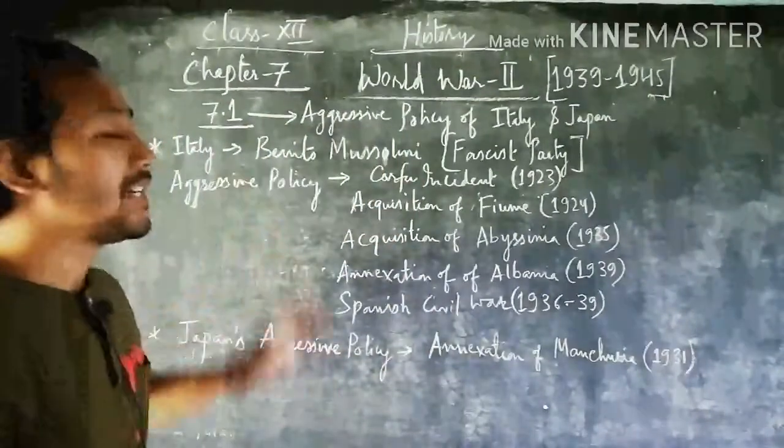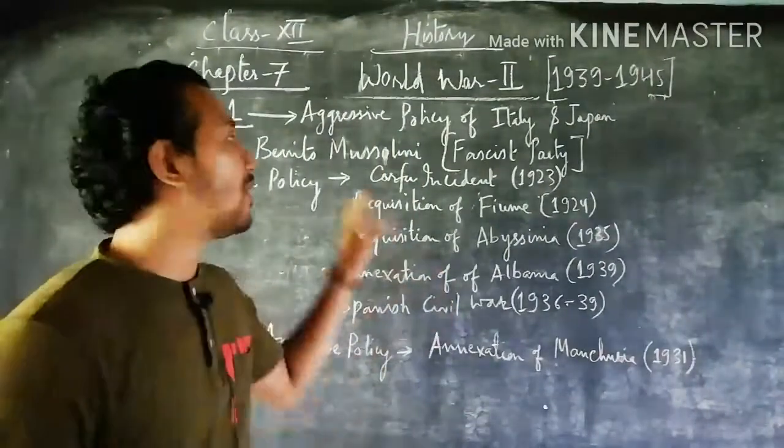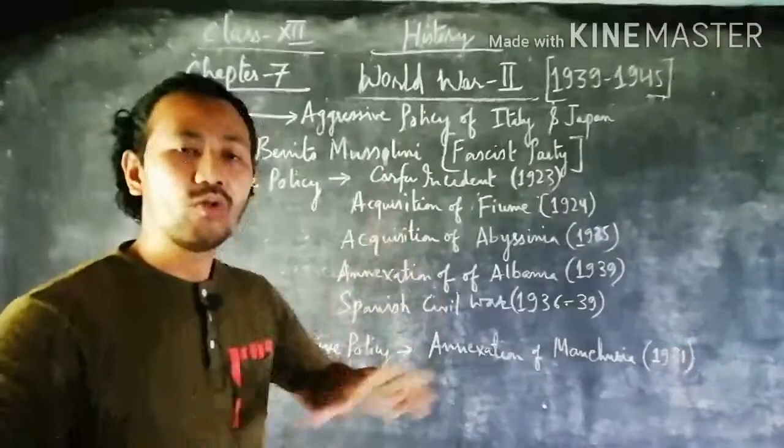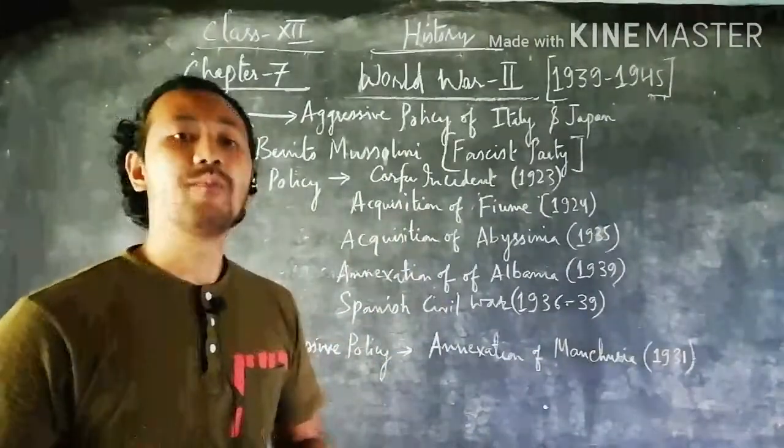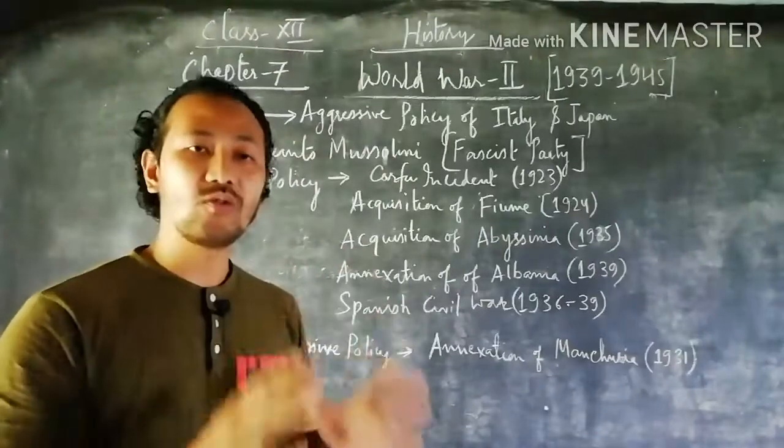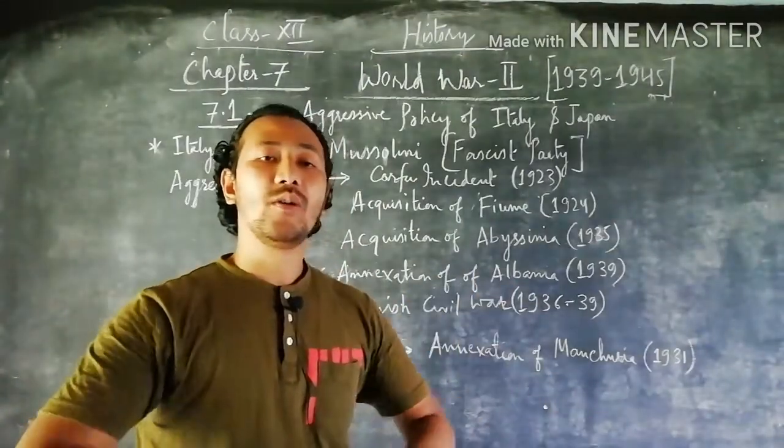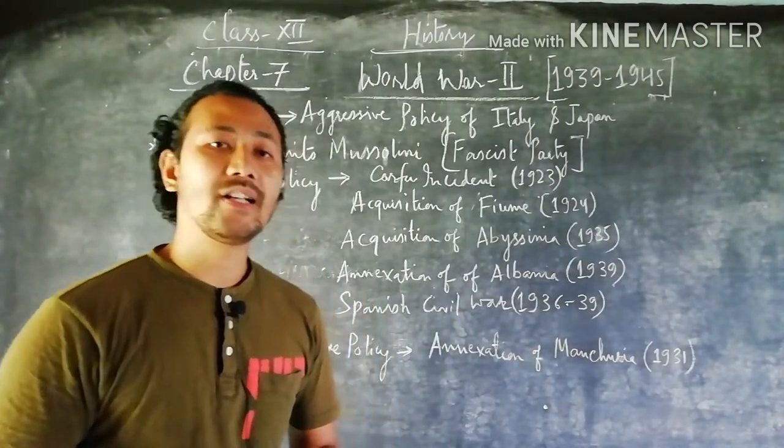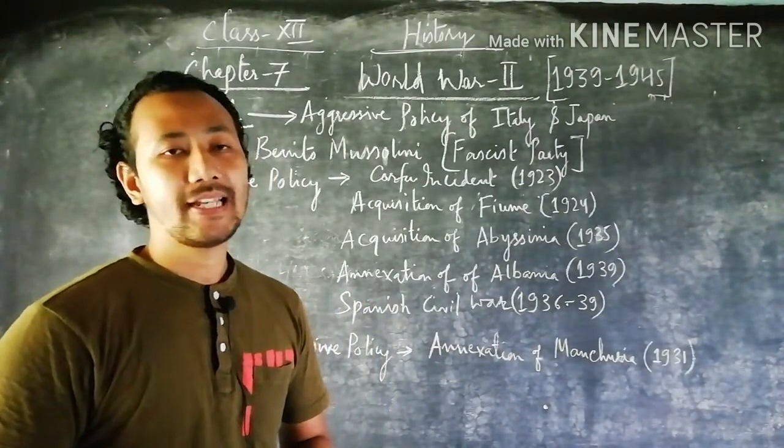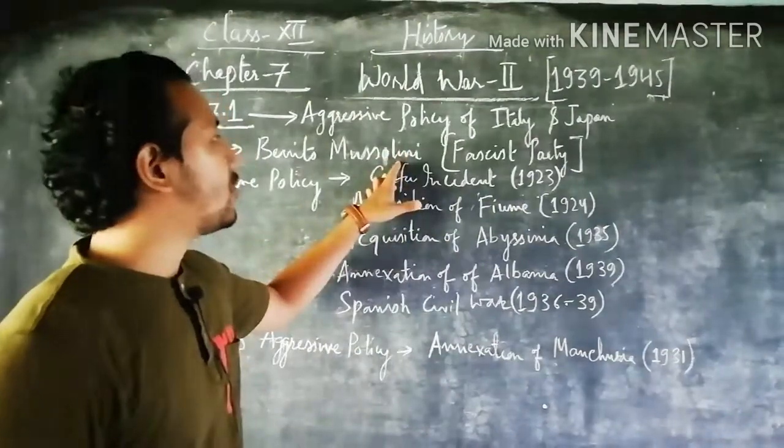We will talk first about Italy and how Italy under the leadership of Benito Mussolini took lots of aggressive policies before the Second World War. These kinds of aggressive policies led to the rise and outburst of the Second World War in the year 1939 from first of September.